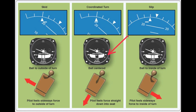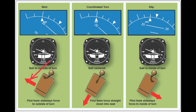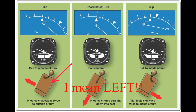In a coordinated turn, the ball is in the center of the skid slip indicator and the little wing is on the tick mark. This is going to be a two minute turn if we were to do a 360. Notice that the pilot feels like the force is straight down into the seat — this is what you want. In a skid, you feel like you're going to slide off the seat to the right, so we need to correct for this by stepping on your left rudder.